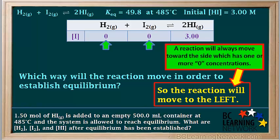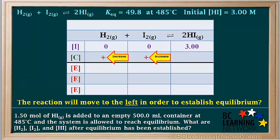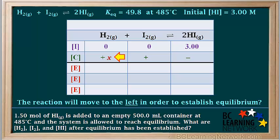Because H2 and I2 both have initial concentrations of zero, the reaction moves toward the left. In cases where there is a zero concentration on one side, you don't need to calculate a trial KEQ — the reaction always moves toward the side with a zero initial concentration. Because the reaction moves to the left, the concentrations of both reactants H2 and I2 will increase, so their changes will be positive. We don't know how much H2 will increase, so we call it X. To find the changes in concentration of the other species, we use the coefficient ratios in the balanced equation.